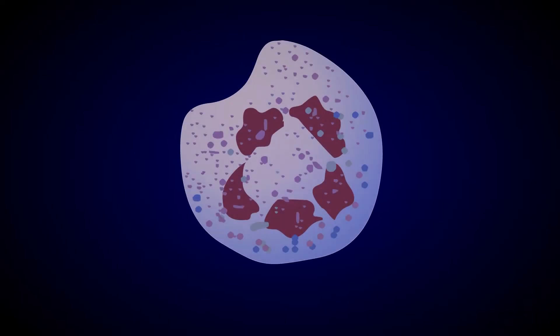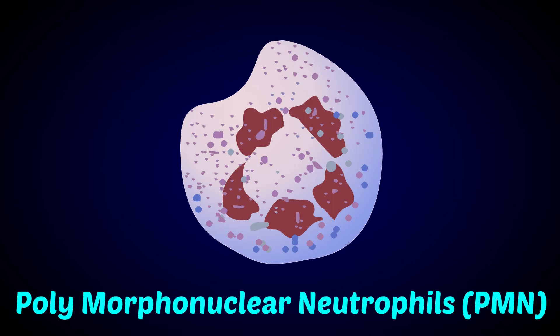What are neutrophils? Their nuclei can occur in more than one form, hence they are called polymorphonuclear neutrophils, or PMN.